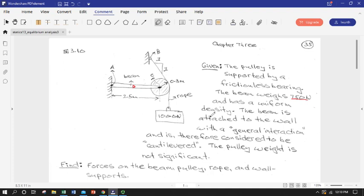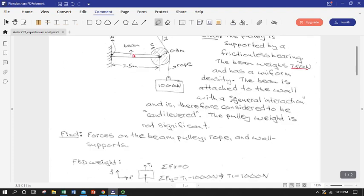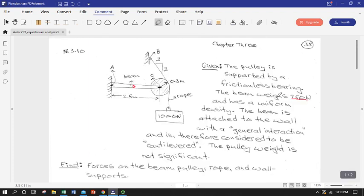And we're told something about the support reactions at point A. The beam's attached to the wall with a general interaction. So that means a general interaction is like a weld, remember, so the wall at point A can apply a force in both directions in the X, it can pull up, push down, and most importantly it can apply a moment.